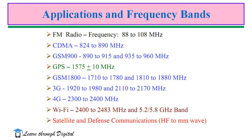For FM radio, the frequency range is 82 to 108 MHz. For CDMA, it is 824 to 890 MHz. For GSM 900, the frequency range is 890 to 915 and 935 to 960 MHz. For GPS, it is 1575 ± 10 MHz. GSM 1800 and for 3G, the frequency range is 1920 to 1980 and 2110 to 2170 MHz, that is 2.1 to 2.17 GHz. Wi-Fi frequency ranges are 2.4 to 2.483 GHz and also 5.2 to 5.8 GHz. For satellite and defense communications, we use high-frequency to millimeter-wave band frequencies.